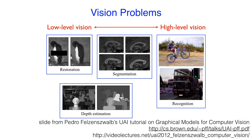In these settings we're usually thinking about graphical models that are designed by the modeler. The modeler decides to have variables representing pixels arranged in a grid, or variables for each time step with dependencies between the same variable at different time steps.